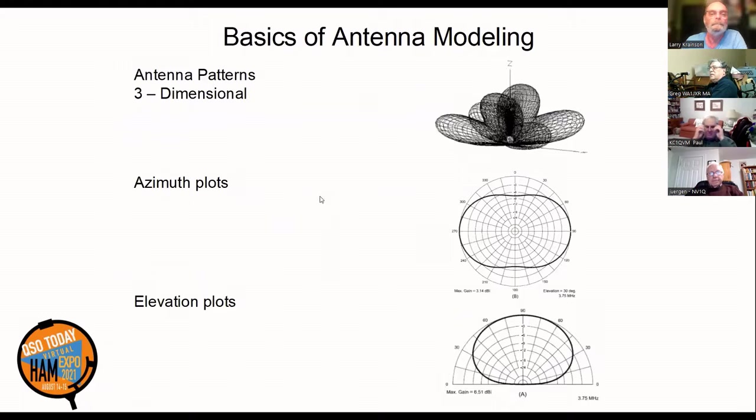Here you see a typical three-dimensional plot. If you take a horizontal slice through that three-dimensional plot, you get the azimuth plot, the northeast-southwest look. If you take a vertical slice through it, you get the elevation plot showing the takeoff angle.